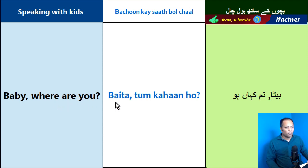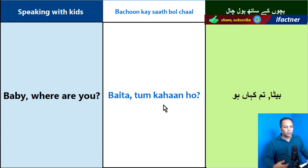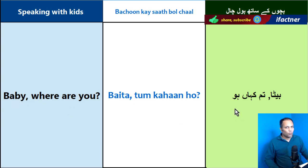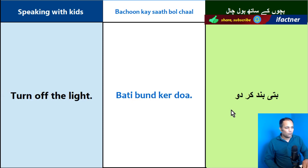Baby, where are you? Baita, tum kaan ho. Baita means 'baby,' tum means 'you,' kaan means 'where,' ho means 'are.' Baita, tum kaan ho — Baby, where are you?